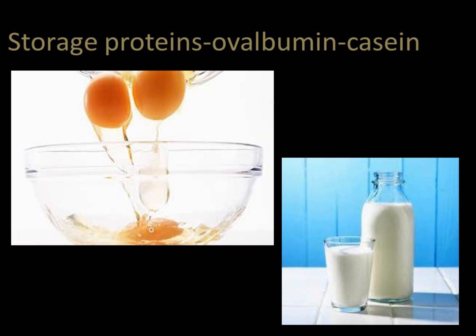Storage proteins store amino acids. Examples include ovalbumin and casein. Ovalbumin is found in egg whites and casein is a milk-based protein.